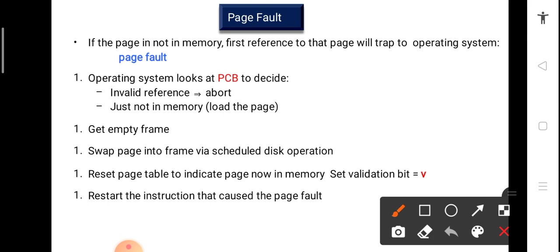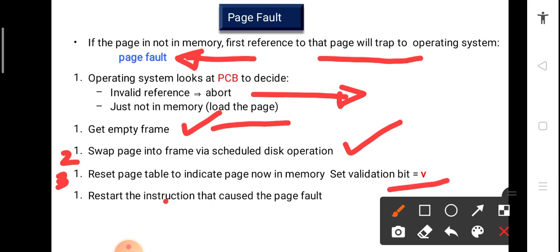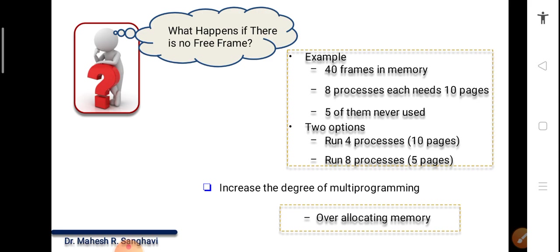If a page is not in memory, we need to trap that page to the operating system — this is called a page fault. Page fault is a costly operation because we need to search the PCB in the operating system. An invalid reference will cause abort; otherwise, we need to load that page. The process is: first, get an empty frame; second, swap the page in via a scheduled disk operation; third, reset the page table to indicate the page is now in memory and set the validation bit to V; fourth, restart the instruction that caused the page fault.